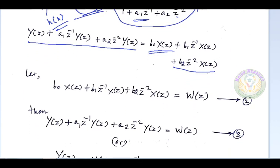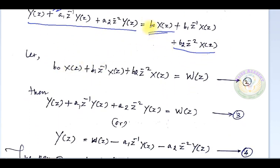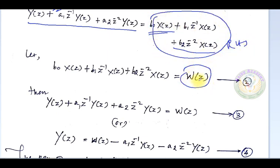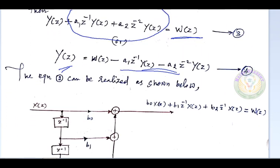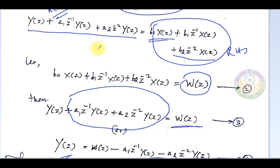We take the right-hand side and define it as an intermediate variable W(Z). Then we can substitute W(Z) in place of the RHS. In Equation 2 we will represent the W(Z) part using a block diagram, and in Equation 3 we represent the Y(Z) part using a block diagram.